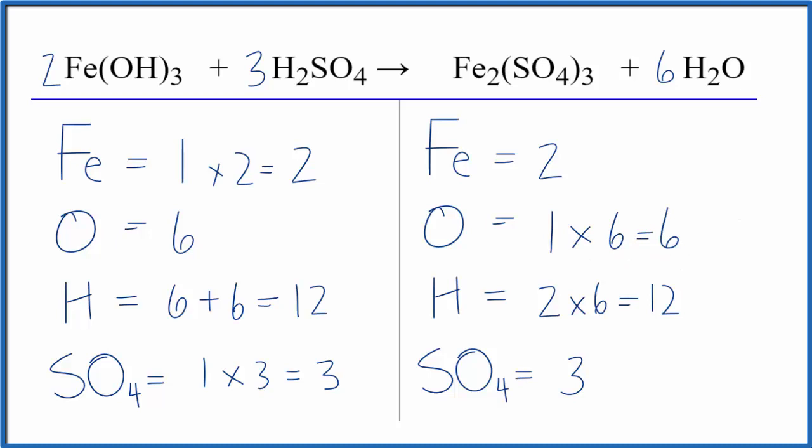This equation is balanced. The trick is, if you have a polyatomic ion on both sides of the equation, count it as one thing. It makes it a lot easier, and it makes it more obvious what you need to change.